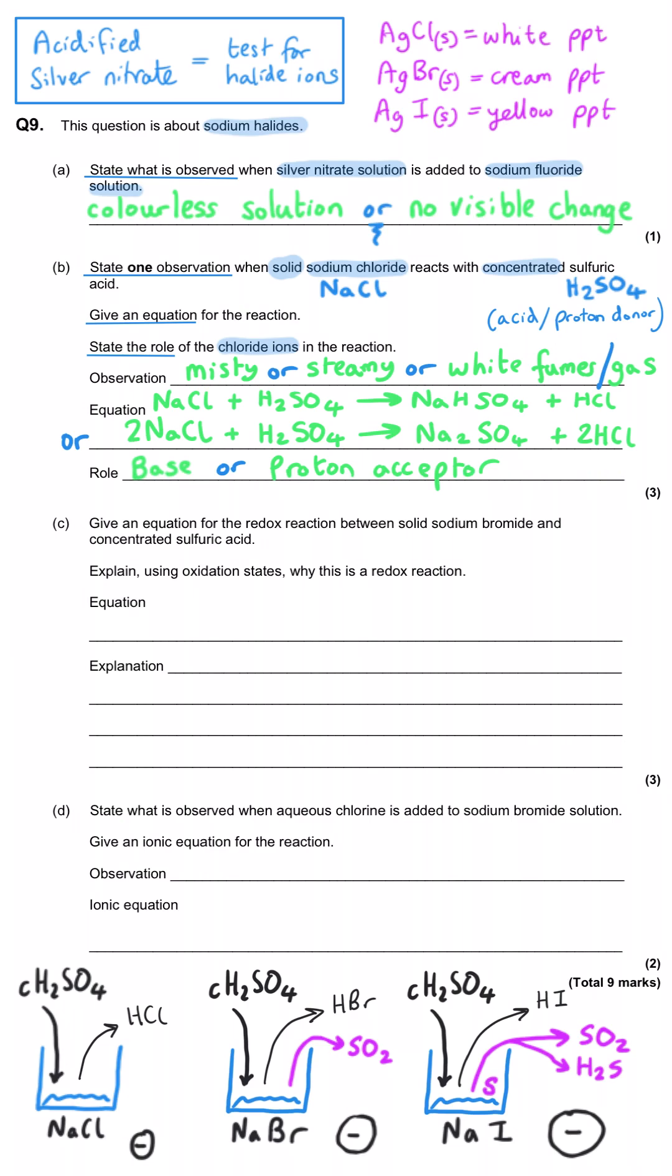Give an equation for the redox reaction between sodium bromide and concentrated sulfuric acid. Explain using oxidation states why this is a redox reaction. Well, as I've already mentioned, bromide is a better reducing agent than chloride ions, and so that is how redox is able to occur. The bromide gives away electrons to the sulfur in the sulfate.